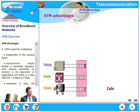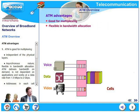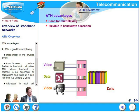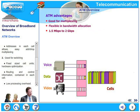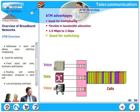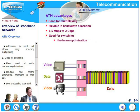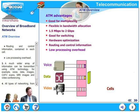Let's look at the ATM advantages — there are plenty of them. ATM is good for multiplexing. It is independent of the physical layers. It is asynchronous in nature. Flexible in bandwidth allocation, ATM delivers bandwidth on demand. It is not dependent on applications and works at a data rate from 1.5 Mbps to 2 Gbps. The ATM addresses in each cell allow easy add and drop multiplexing. It is good for switching, fixed size cell units, hardware optimization, routing and control information contained in each cell, and very low processing overhead.